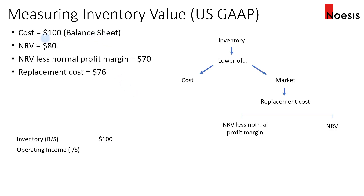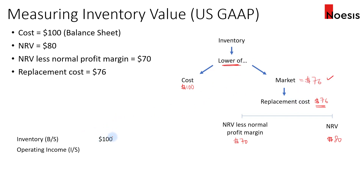US GAAP example: cost is $100, NRV is $80, NRV less normal profit margin is $70, and replacement cost is $76. The replacement cost of $76 falls within the range of $70 to $80, so market equals $76. Comparing cost ($100) and market ($76), the lower is $76. The inventory is written down from $100 to $76, recognizing a loss of $24 in the income statement.